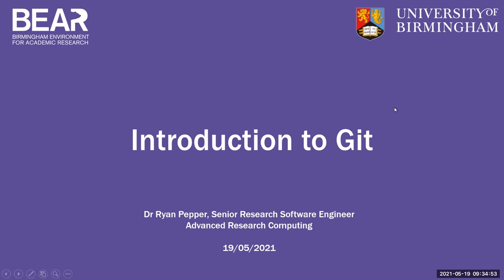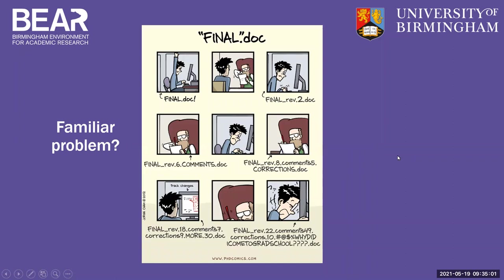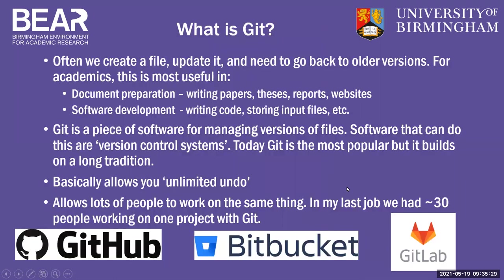Today I'm going to tell you about Git. Git attempts to solve this problem which most people have had at some point — you end up with document one, get some feedback, have document version two, then it goes back and forth and you get version six, seven, eight, nine, ten with corrections. It gets very messy. Git is basically a piece of software that helps us create files, update them, and go back to older versions. For academia, it's most useful for document preparation — writing papers, theses, reports, websites — or writing code and storing input files associated with that.